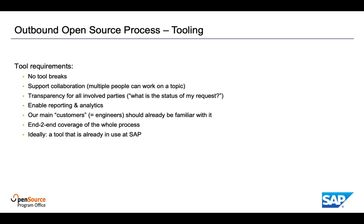Fourth, it must be possible to do reporting and analytics on our process so that we are able to measure maximum and average end-to-end process execution time, as well as the duration of single process steps, in order to find out if some of them are taking too long and might require further fine tuning and improvement. Fifth, the tool should be designed with our customers — that means with our developers — in mind, and ideally they should already be familiar with it so that they don't have to learn a new tool. Sixth, the tool should cover the whole process end-to-end. And seventh, ideally the tool should also already be in use at SAP.